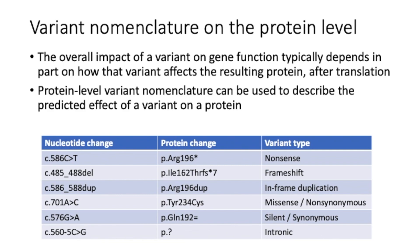This variant would be predicted to lead to premature truncation of the TP53 protein during translation. In the second variant example, four nucleotides are deleted, which leads to a shift in the three-nucleotide reading frame for translation, where every three consecutive nucleotides are translated into an amino acid in the protein. The first amino acid residue affected by this deletion is the isoleucine at amino acid position 162. This isoleucine is converted to a threonine in the protein due to the shifting of the reading frame caused by the deletion. Shifting the reading frame also leads to the creation of a premature stop codon downstream of the deletion — in this example, seven amino acids downstream of the isoleucine at position 162. The new premature stop codon is again denoted by an asterisk, and the number after the asterisk denotes how far downstream this occurs in the protein.